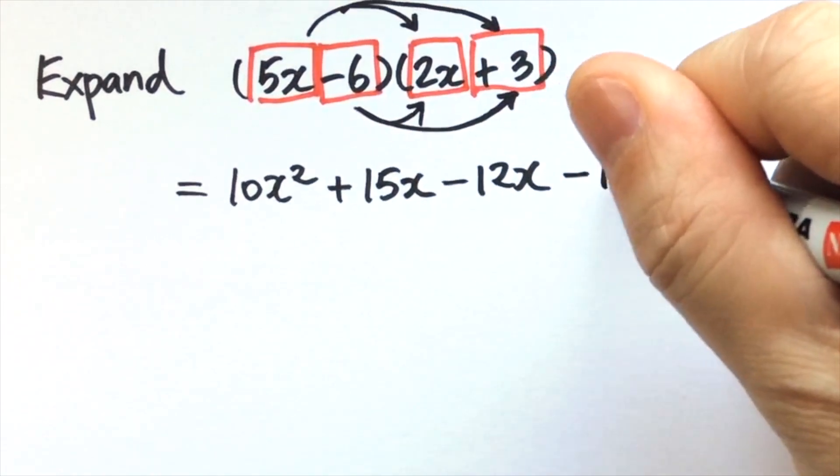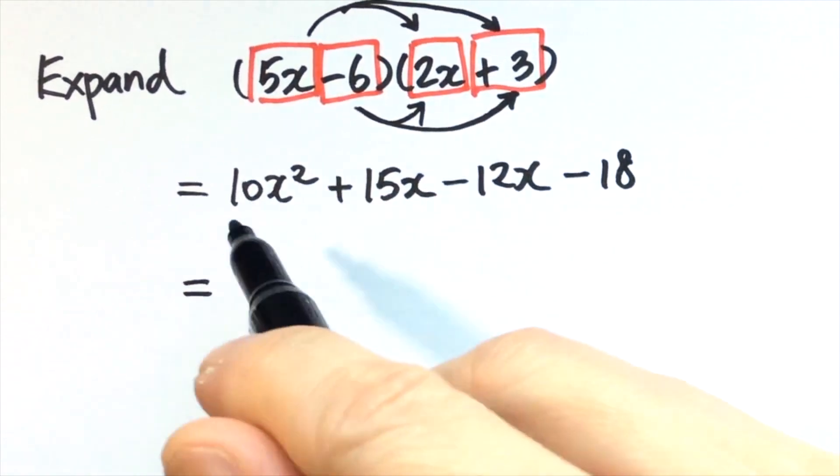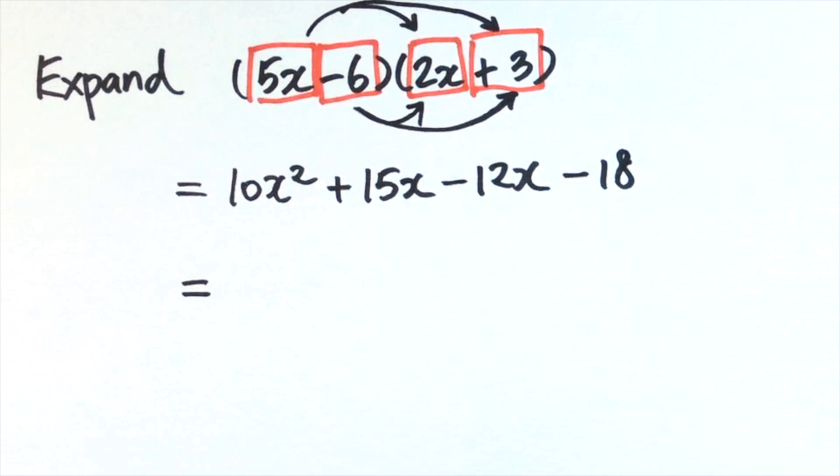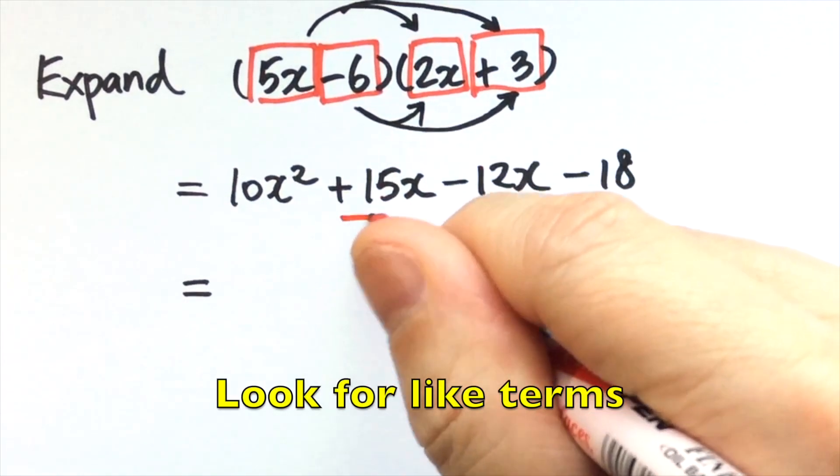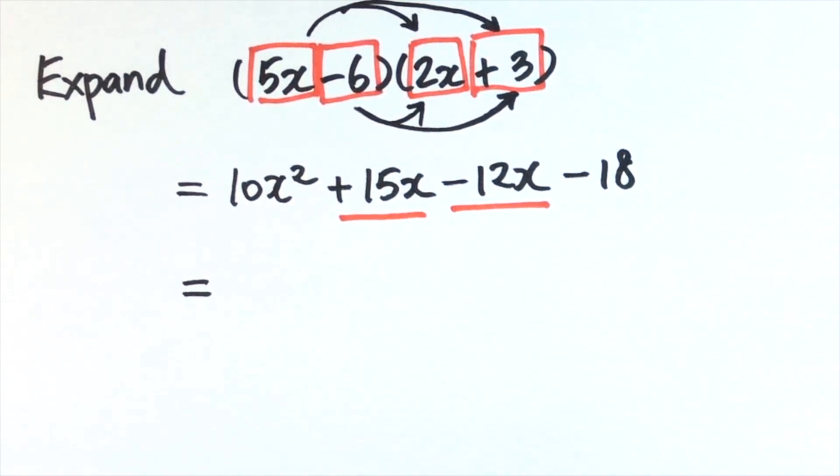After we expand all these terms, we have a total of four terms in the polynomial. But we can see that we have two like terms here, so we can further simplify. This is not the final answer.